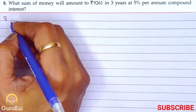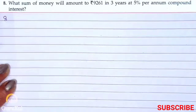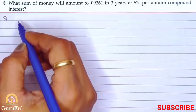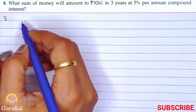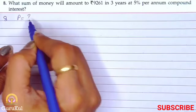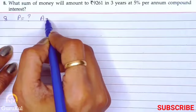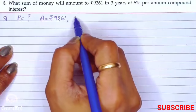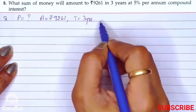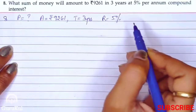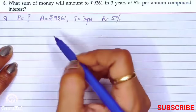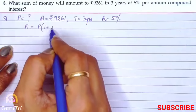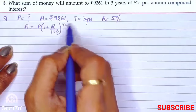Question number 8: What sum of money will amount to Rs. 9,261 in 3 years at 5% per annum compound interest? Here the principal is unknown and we need to find it. The given amount is Rs. 9,261, time is 3 years, and rate is 5%.